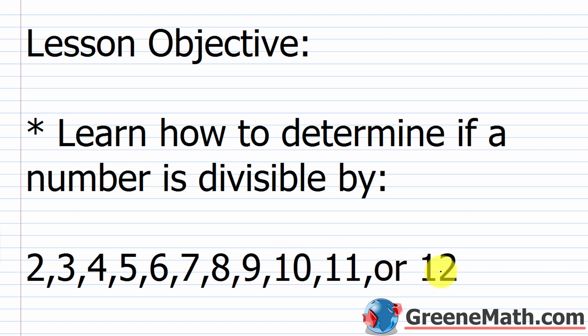So essentially it's the numbers 2 through 12. We're going to hold off on 7 and 11 until the very end because the divisibility rules for 7 and 11 are a bit more time-consuming. I'm not going to say they're complex, but they're more time-consuming than the other ones.